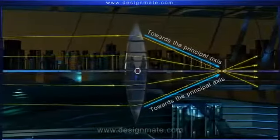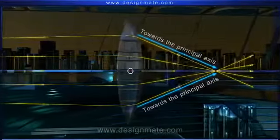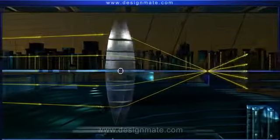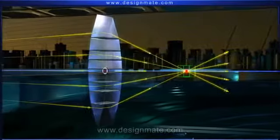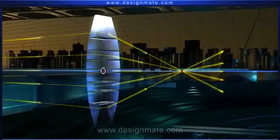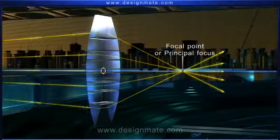Bending towards the principal axis, after refraction through the lens they converge to a point on the principal axis on the other side of the lens. This point is called the focal point or principal focus of the lens.